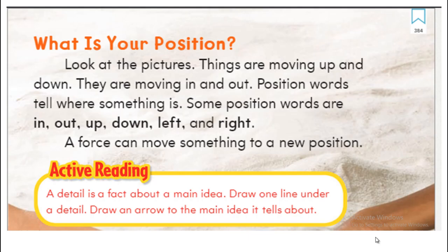What is your position? Look at the pictures — things are moving up and down, they are moving in and out. Position words tell us where something is. Some position words are: in, out, up, down, left, and right. You can also say behind, under, in front of, over. We have so many position words, and force can move objects to a new position.